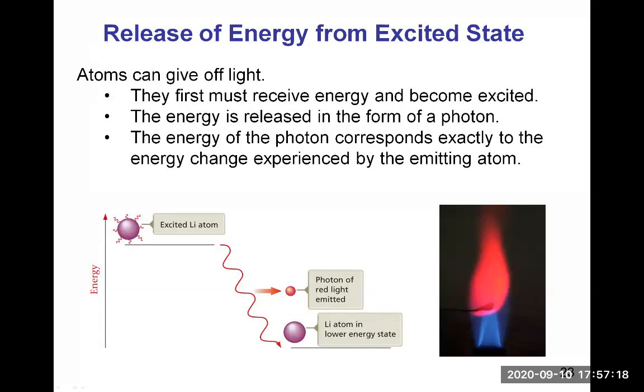In the schematic here for the lithium atom, when external energy is provided to the lithium atom, it moves up into an unstable excited state and will release the energy going back to a lower energy state. The energy is released in the form of a photon of red light in the case of lithium. As you can see from the picture here, when you burn lithium, the flame is red.